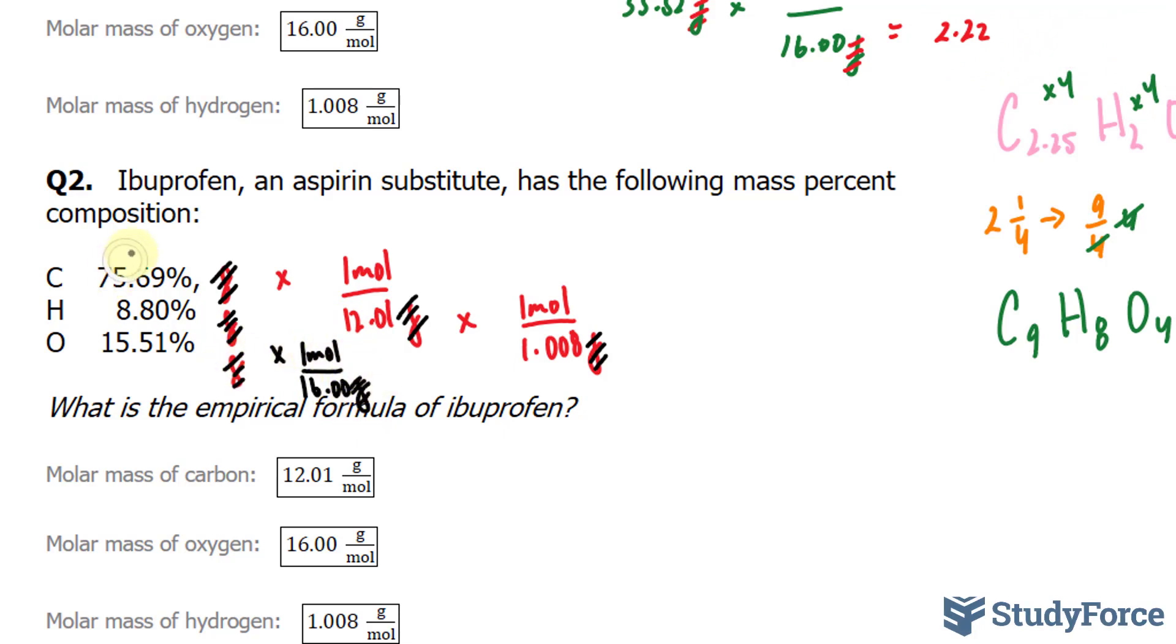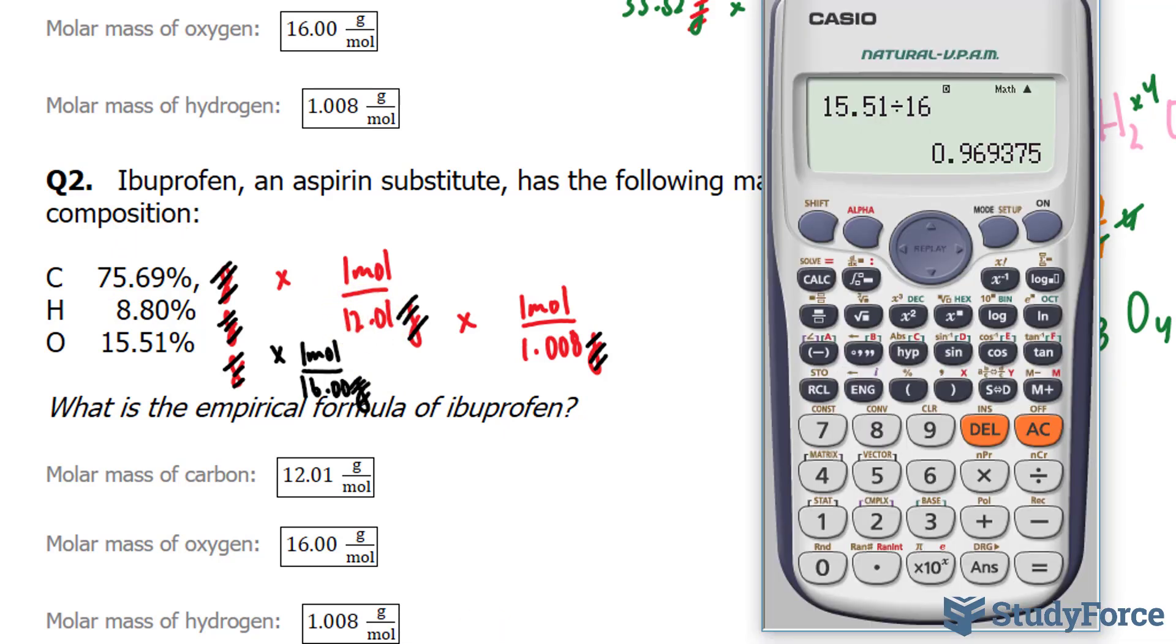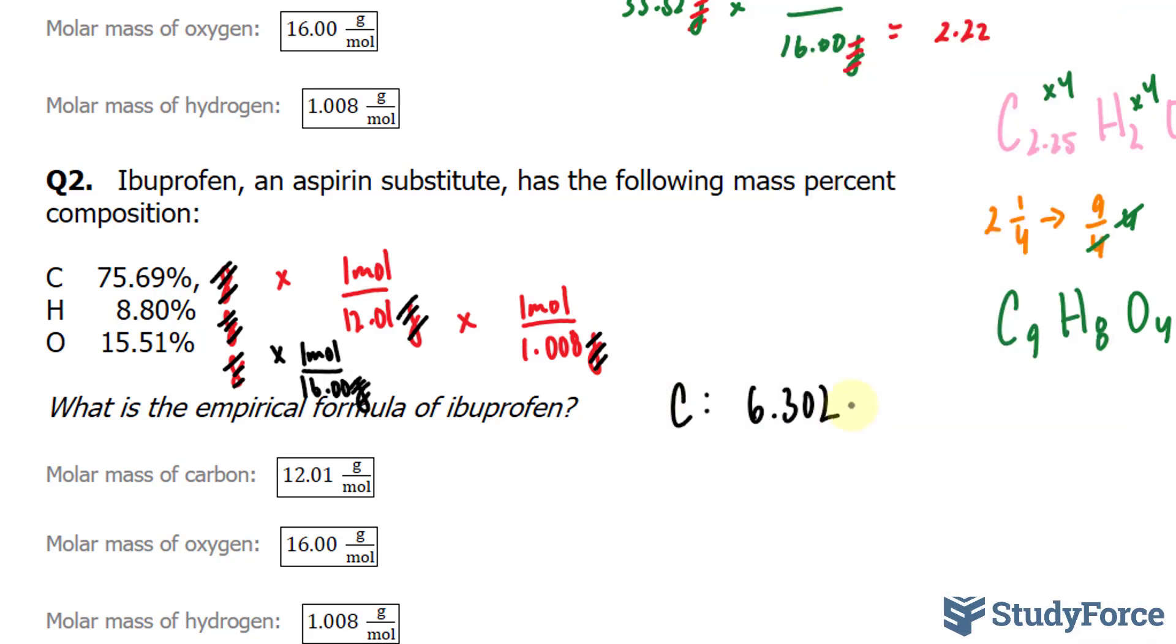Let's start by dividing 75.69 with 12.01. We should have a number with four significant figures, so 75.69 divided by 12.01, and we end up with 6.302. And this has the units of moles. Notice that that's what's remaining.